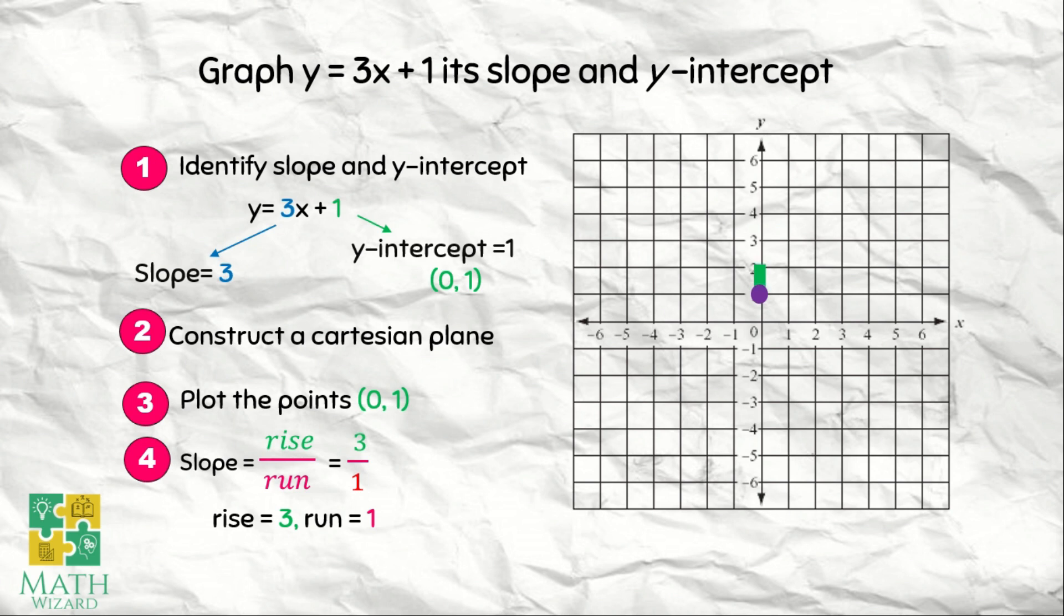So we have 1, 2, 3. And then to the right, we have 1. Okay, plot the point. And then we connect the two dots.